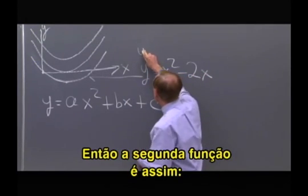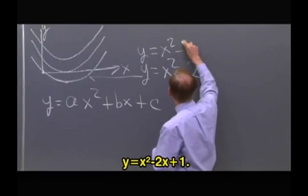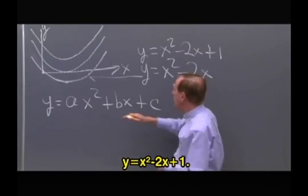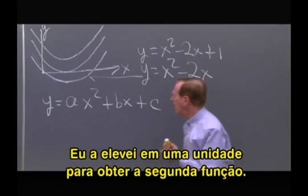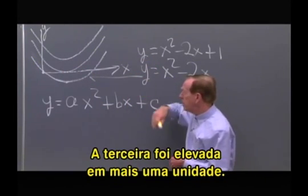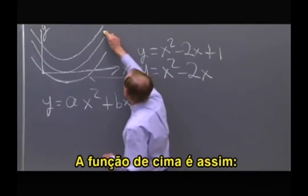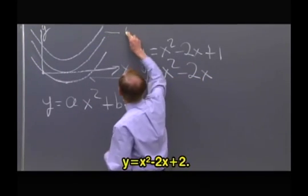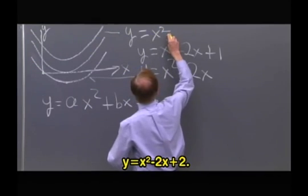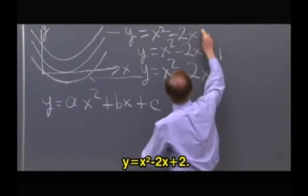That second one is going to be x squared minus 2x, same thing, but plus 1. So I've lifted it up by one to get the second one, and then the next one is lifted up by another one. So the top one is y equals x squared minus 2x plus 2.